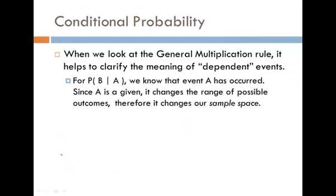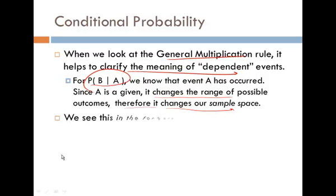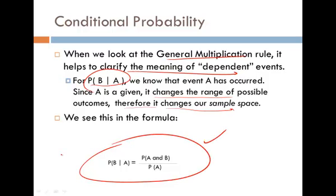The general multiplication rule helps to clarify the meaning of dependent events. For conditional probability, we know that event A has occurred. Since A is a given, it changes the range of possible outcomes and therefore changes our sample space. The formula comes from dividing both sides by the probability of A from the original formula.